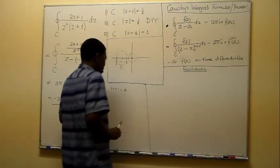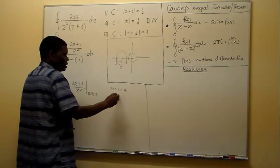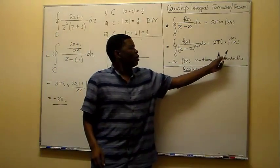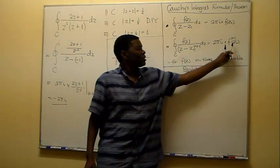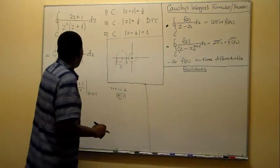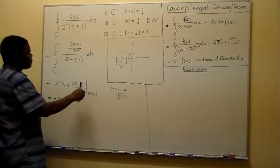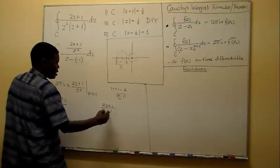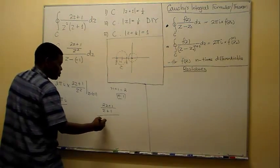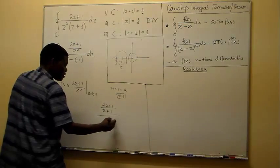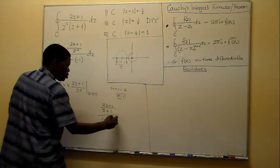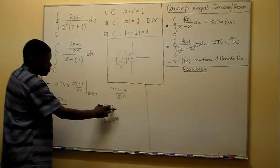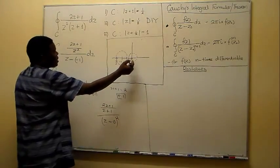So n = 1, which means according to the formula you are going to differentiate f(z) once. In this case our f(z) is going to be (2z + 1) over (z + 1), and in the denominator we have z-squared, which we can write as (z − 0) squared, so this numerator is our f(z), which is analytic in and on this curve.